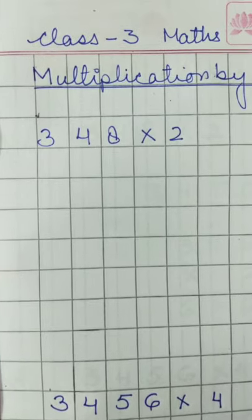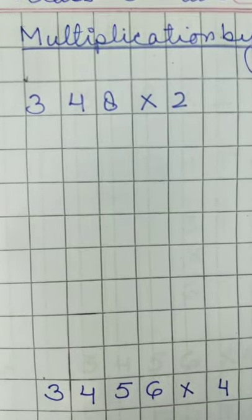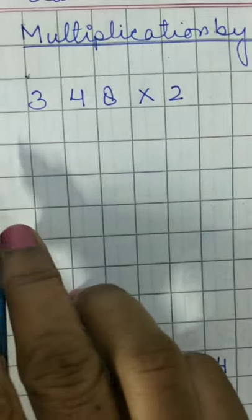When we write digits in maths, we should always write from right to left, starting from ones. Let me show you.